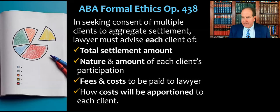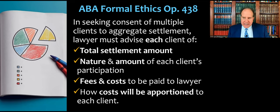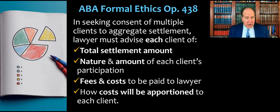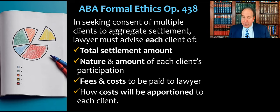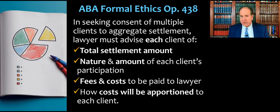The ABA also put out an ethics opinion that gives even more clarity, especially for test purposes — this could come up on the MPRE. In seeking consent of multiple clients to an aggregate settlement, a lawyer must advise each client of: number one, the total settlement amount; number two, the nature and amount of each client's participation; and number three, the fees and costs to be paid to the lawyer and how those costs will be apportioned to each client. The lawyer is not allowed to hide or obfuscate any of these items.